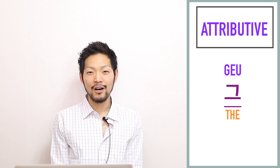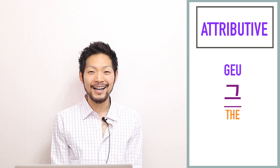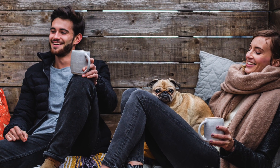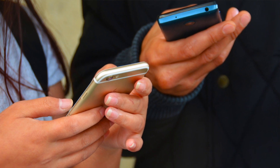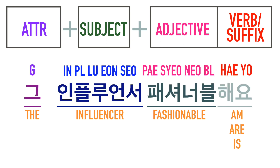Now let's look at the second usage of 그 — meaning 'the,' as in something you and I both know or have been talking about. For example, if your friend starts talking about a famous influencer that you both know and you find them fashionable, you can say: 그 인플루언서 패션업을 해요. Note: drop the R at the end of 'influencer' and change the F sounds to P sounds.